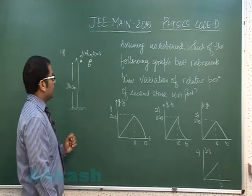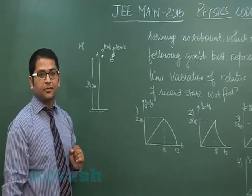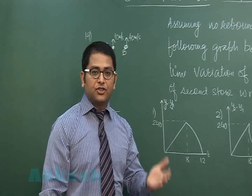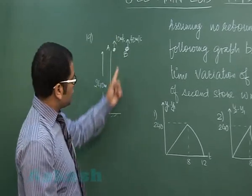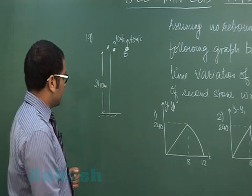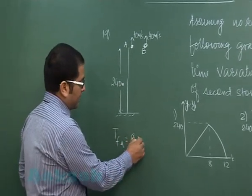Initially both would be in air, and till that time relative acceleration is 0. Relative acceleration would be g after A falls to the ground and remains there. If you calculate the time of flight for A, that's an easy calculation, it would be 8 seconds.